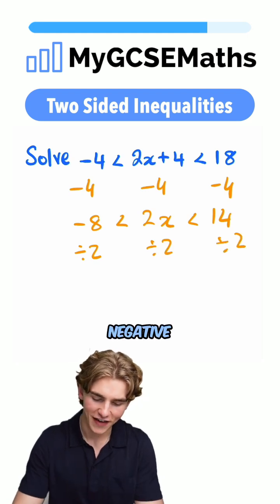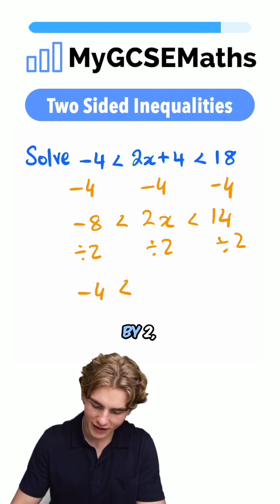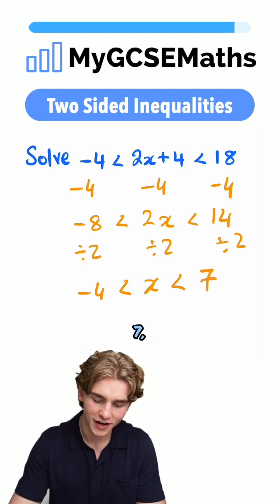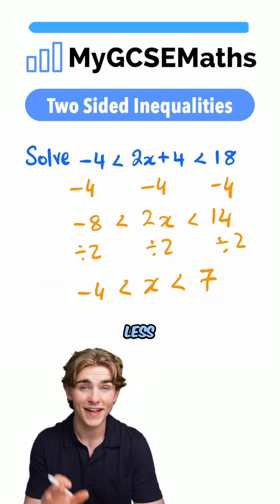What's that going to give us? Negative eight divided by two, that's negative four. And then we have 2x divided by two, that's x, and finally 14 divided by two, that's seven, giving us our final answer: x is greater than negative four but less than seven.